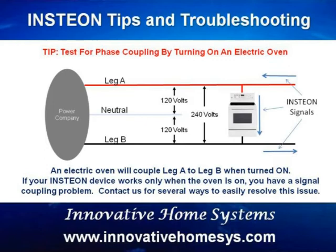To test for this condition, simply turn on your electric oven temporarily to see if the Insteon device starts working normally. If it does, then you have an attenuation problem caused by a lack of coupling between the 120-volt legs. Insteon recommends using at least two dual band devices, one on each of the two 120-volt legs. Contact us if you need assistance in determining which devices can be used to meet this requirement.